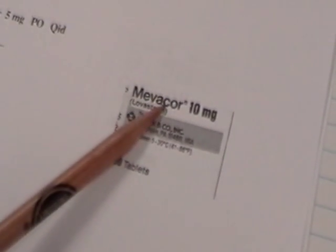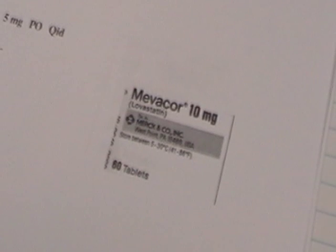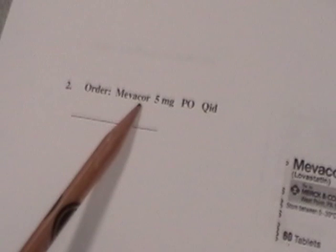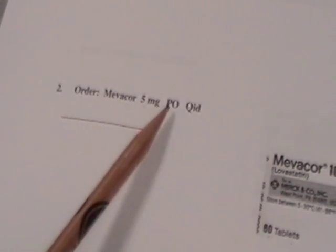Next we are going to work problem number 2. In problem number 2, our medication label shows that we have Mevacor. In this bottle of pills, there are 60 tablets. And each one tablet is equal to 10 milligrams. Our physician has ordered Mevacor 5 milligrams PO, which is by mouth, QID, which is four times a day.